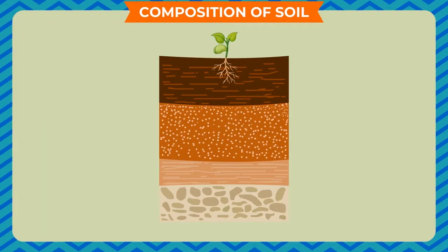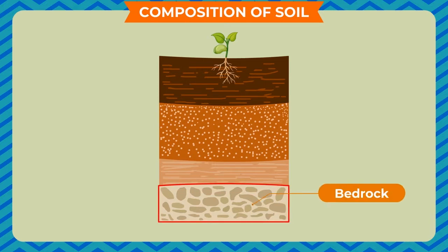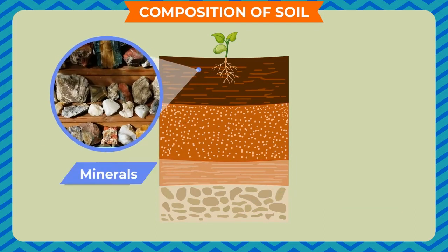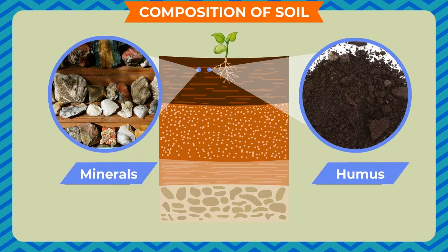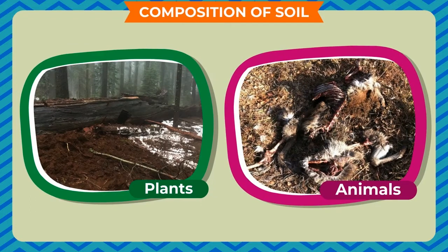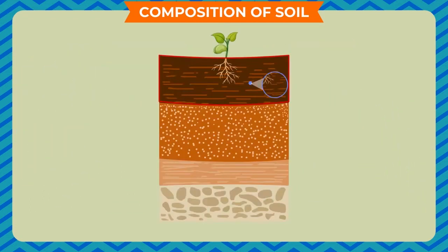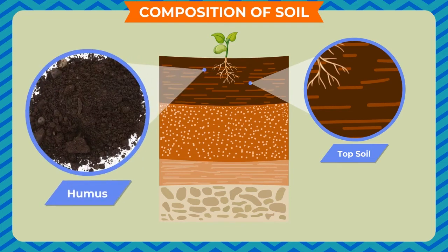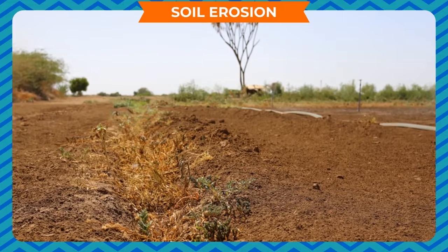Soil has three layers. At the bottom there are big pieces of rocks called bedrock. The soil above the bedrock is called subsoil, which has minerals and some amount of brownish-black material called humus, formed from dead and decayed plants and animals. The uppermost layer of soil is called topsoil, which contains humus and is very fertile.